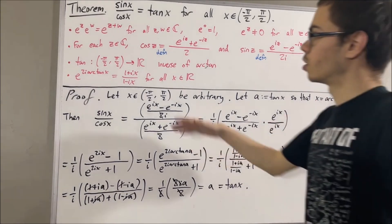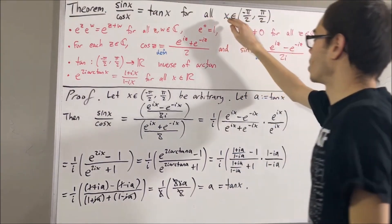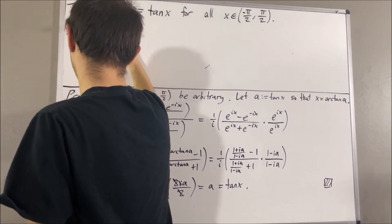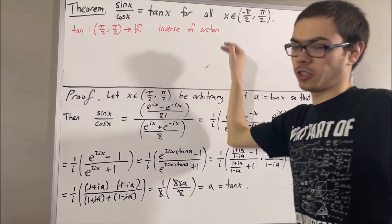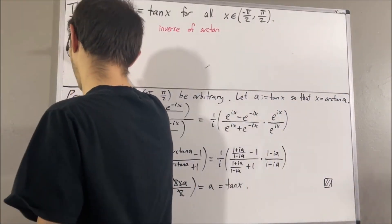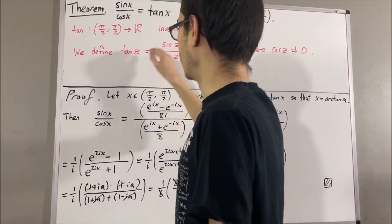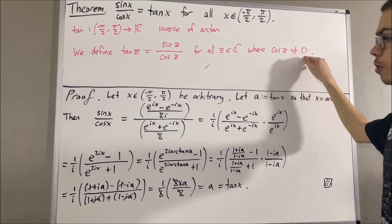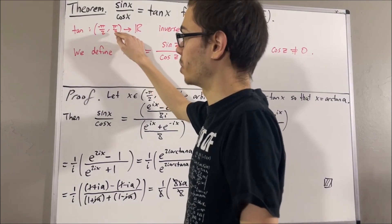So we have proven, according to our definitions, that sine of x over cosine of x is equal to tangent of x for all real numbers x in the open interval negative pi over 2, comma pi over 2. Now, our definition of tangent was that it's the inverse of the arctangent function. But now we can actually extend the definition of tangent as follows: we define tangent of z to be sine of z over cosine of z, for each complex number z where cosine of z is not equal to 0.